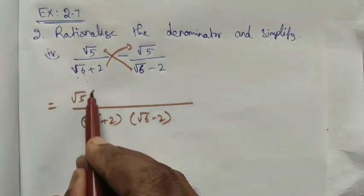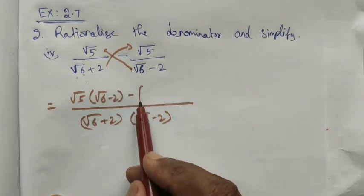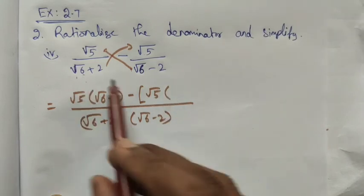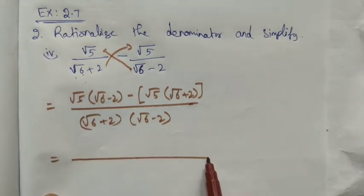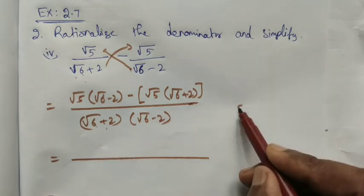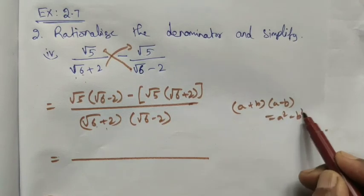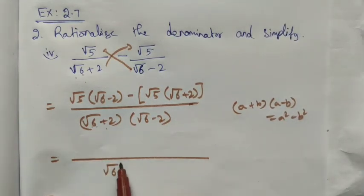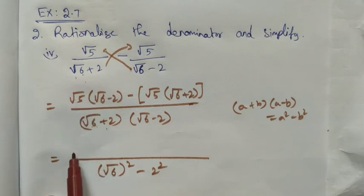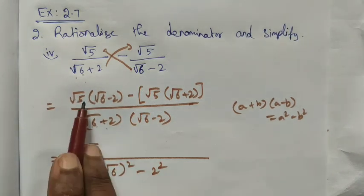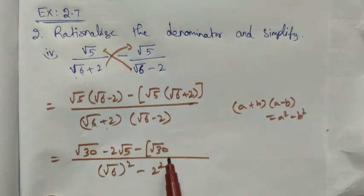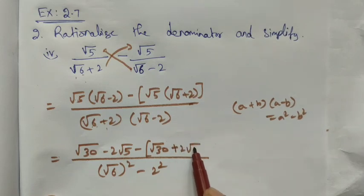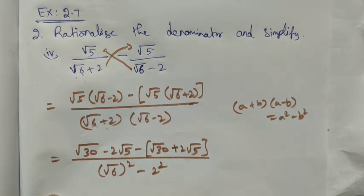Cross-multiplying the numerator: √5 × (√6 - 2) minus √5 × (√6 + 2). In the denominator it is in the form (a + b)(a - b), so the formula is a² - b², giving (√6)² - 2². Now multiply √5 inside: √5 × √6 = √30, and then -2√5. Minus of: √5 × √6 = √30, and then +2√5.